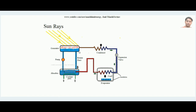In the vapor absorption cycle, heat is absorbed in the generator and removed from the absorber. That heat can be supplied to the generator by sun rays — this is exactly what the solar refrigeration system is. In the generator, instead of heat from other means, direct sun rays are made to fall on it. Concentrating collectors can focus more sun rays to supply sufficient heat and develop the required refrigeration effect in the evaporator.